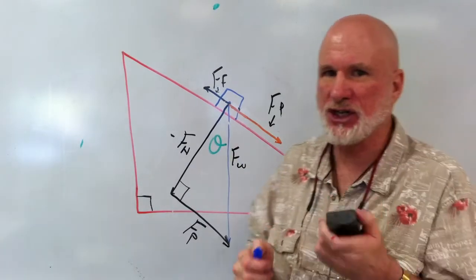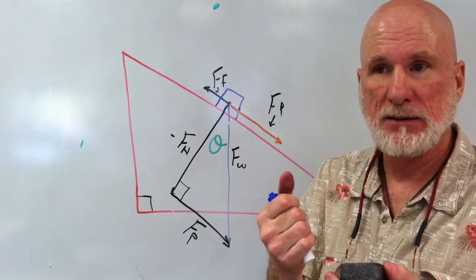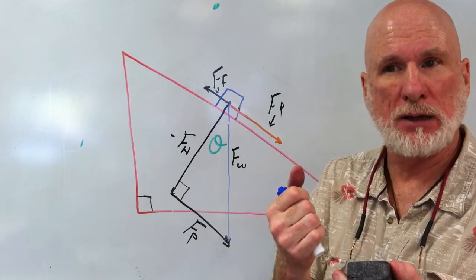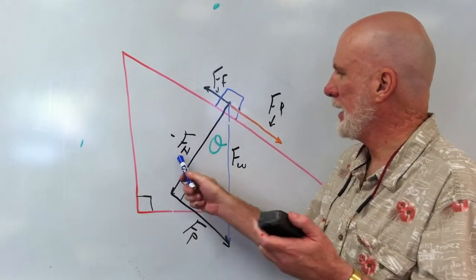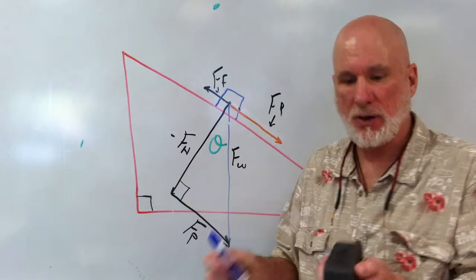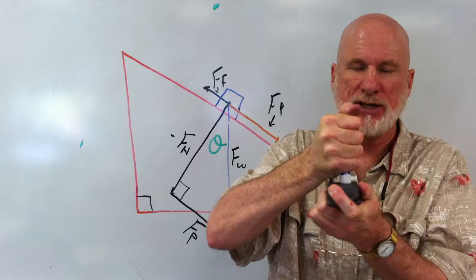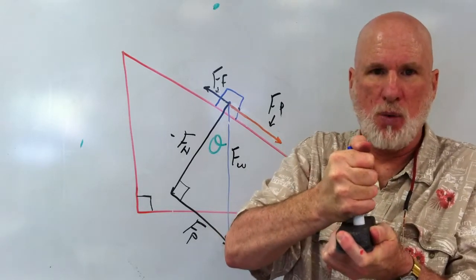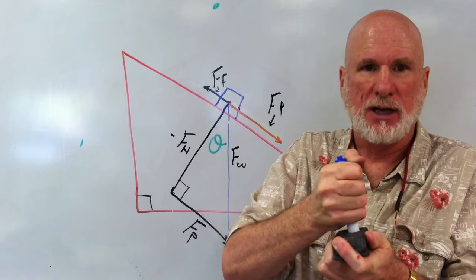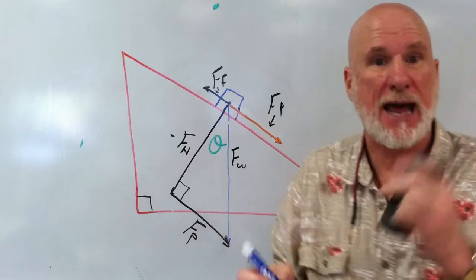So somehow friction is dependent upon weight or maybe not weight because the weight is reduced and it's actually becoming the normal. So if it's flat, the normal and the weight are the same, right? So let's look at it if it were flat. So the greater the weight, the greater the friction. The less the weight, the less the friction. So there's some relationship between weight and friction.